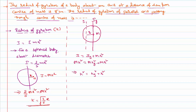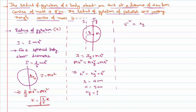Now applying this to the problem: it is given that the radius of gyration of the body about an axis at a distance of 4 cm from the center of mass is 5 cm — meaning r = 4 cm and k = 5 cm. We are asked to find kg. It is quite simple: just substitute in the formula. k² = kg² + r², so 5² = kg² + 4².